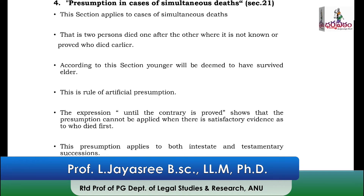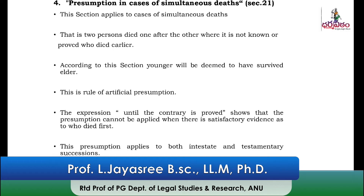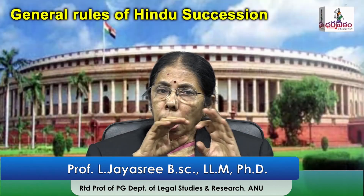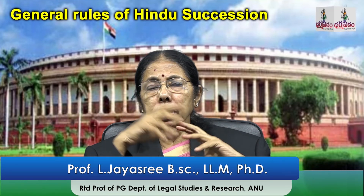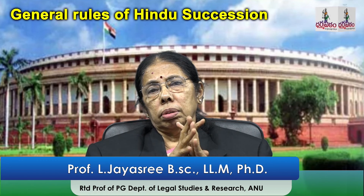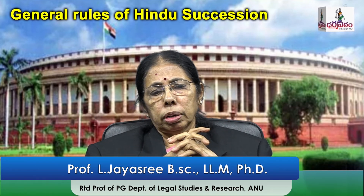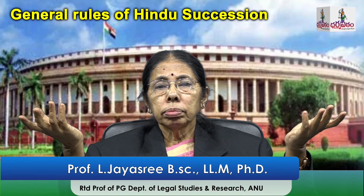In such cases, according to Section 21, there is a presumption that the younger shall be deemed to have survived the elder. This is only an artificial presumption. This presumption will not work or will not apply where facts prove otherwise — where there is clear evidence who died earlier. This presumption applies only when there is no evidence who died earlier.